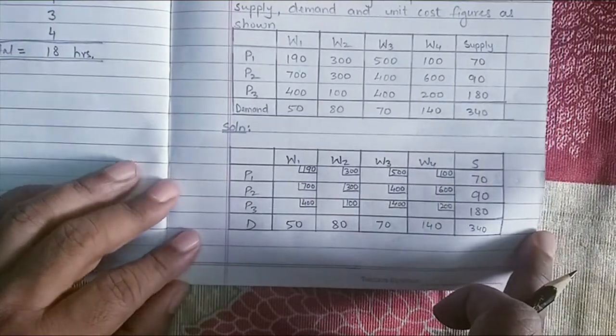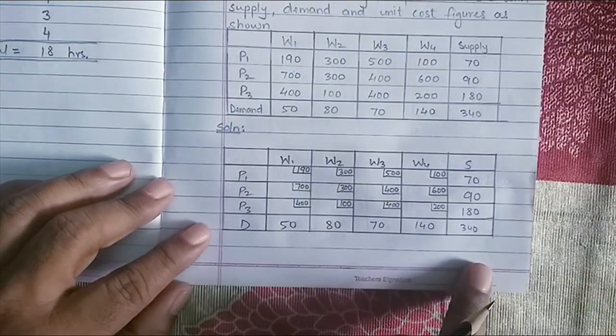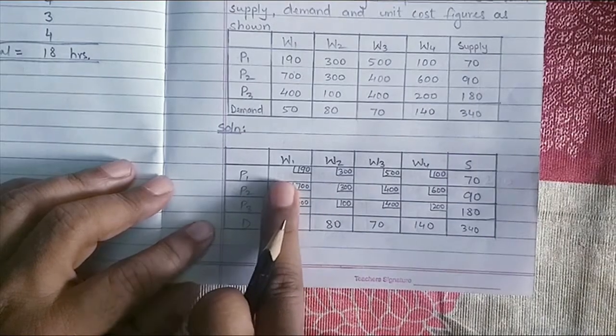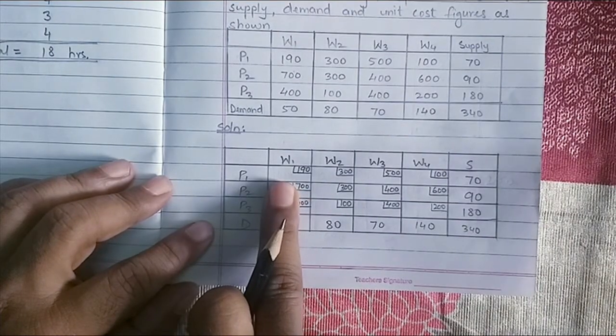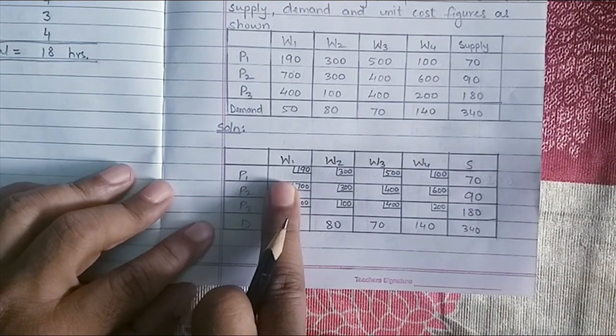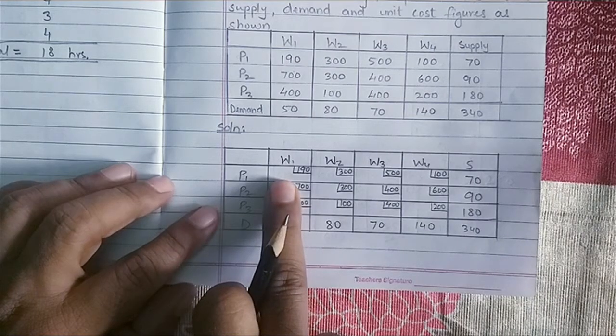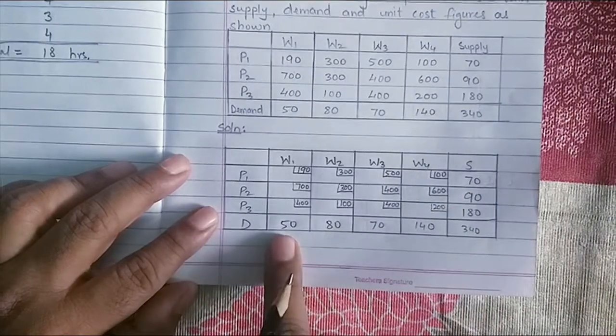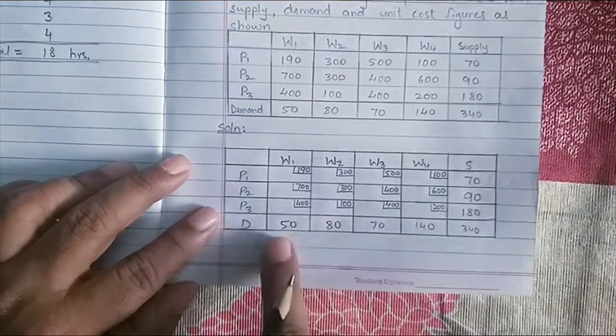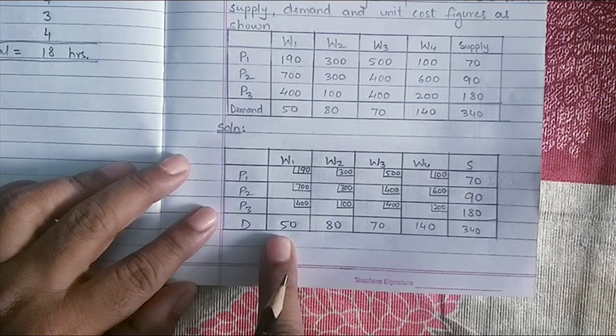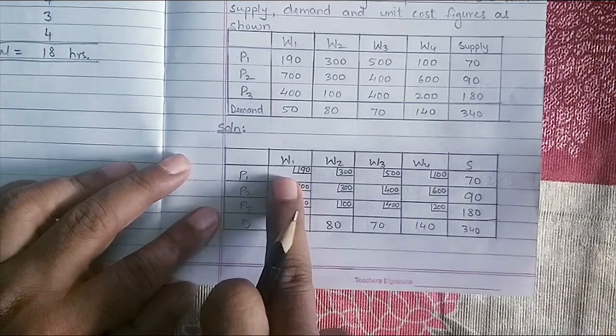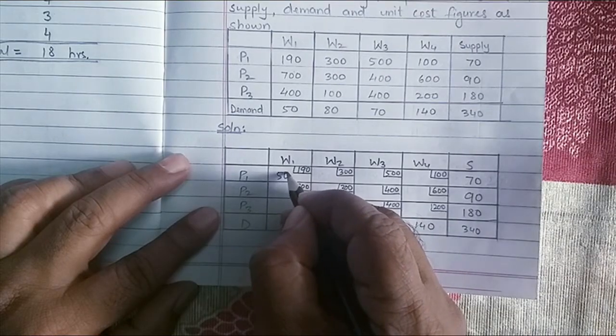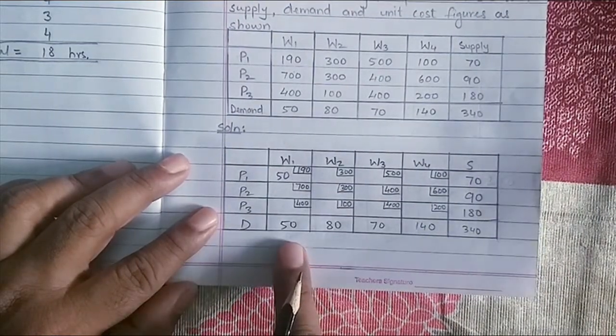Now in the North-West corner, the first step is to find the North-West corner which is the first cell in the transportation table and do the allocations there. To do the allocation, check the supply value and the demand value. Whichever is the least value or the smallest value, assign that in the cell. So 50 is the smallest value. I will put 50 here.